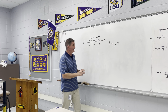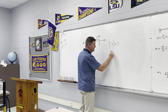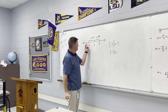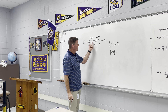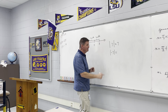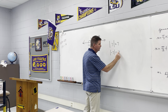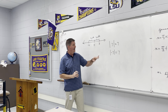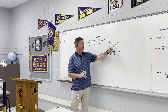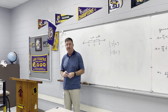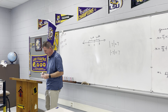Now, the absolute value of negative 7, just like we showed with the 3s, negative 7 would also be 7 units away from 0, so the absolute value of negative 7 would also be 7. So again, absolute value is the distance from 0 on a number line.